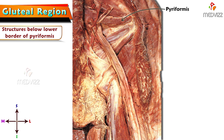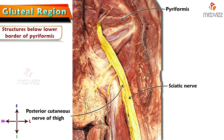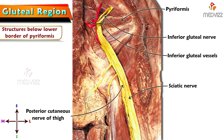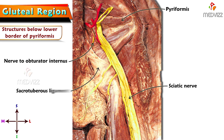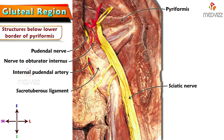The thick nerve emerging below the piriformis is the sciatic nerve. The nerves associated with the sciatic nerve are the posterior cutaneous nerve of thigh and the inferior gluteal nerve, along with its vessel, the inferior gluteal artery. The nerve medial to the inferior gluteal nerve is the nerve to obturator internus. The fibrous structure medial to the sciatic nerve is the sacrotuberous ligament — a thick, white-colored band. The nerve in relation to the sacrotuberous ligament is the pudendal nerve, which, along with the internal pudendal artery, runs medial to the sacrotuberous ligament. Tracing the pudendal nerve and nerve to obturator internus, they go deep to the sacrotuberous ligament and are shown medial to it along with the internal pudendal artery.